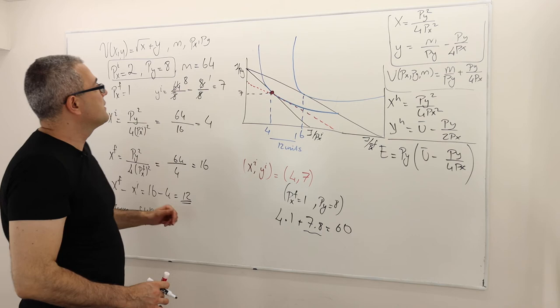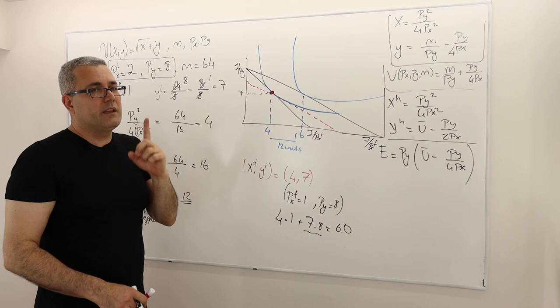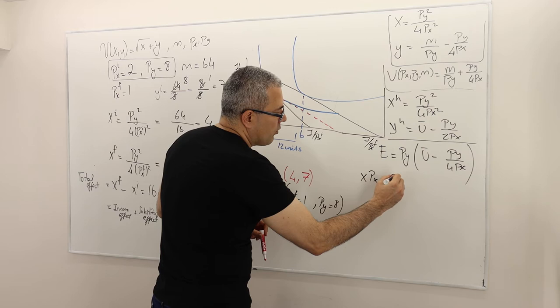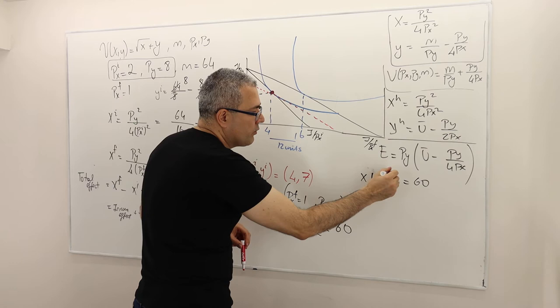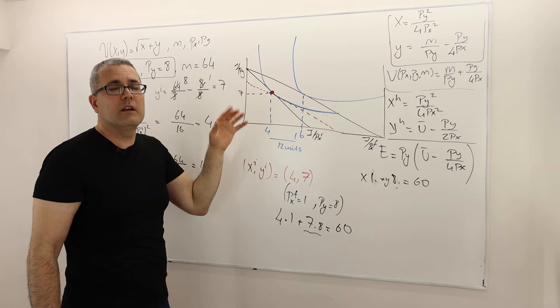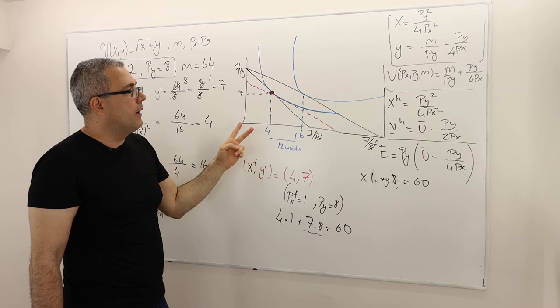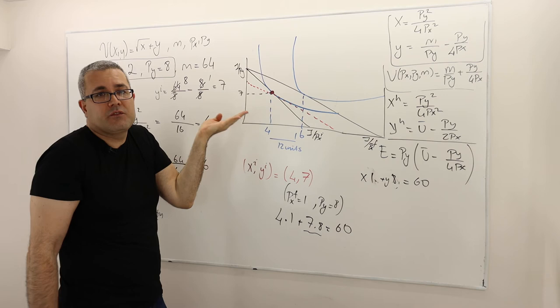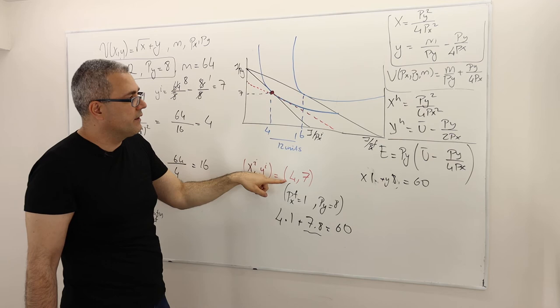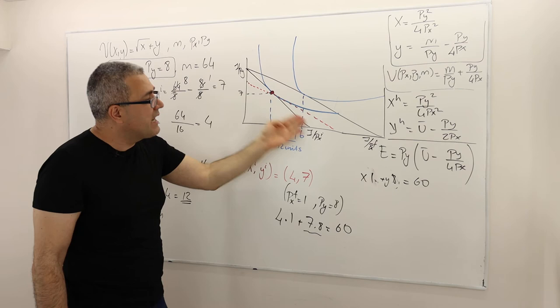So it's $60 rather than $64. If you draw the line X·PX + Y·PY = 60 with PX=1 and PY=8, it's going to be this dotted line. There's only one line that crosses point (4,7) and has a price ratio of one to two — parallel to the black line. This red dotted line crosses (4,7) at price ratio 2:1, so the income required for this budget line has to be $60.